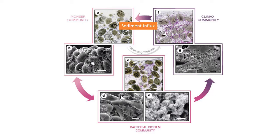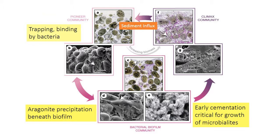Microbialites form primarily from the trapping and binding of sediment by these biofilms. Sediment is deposited on the bed, and then filamentous bacteria grow around it to trap and bind the grains. In carbonates, chemical changes beneath this biofilm can promote precipitation of aragonite — you get these little needles of aragonite visible in picture E. That early cement formation is really critical for allowing microbialites to grow and build upwards in carbonates.